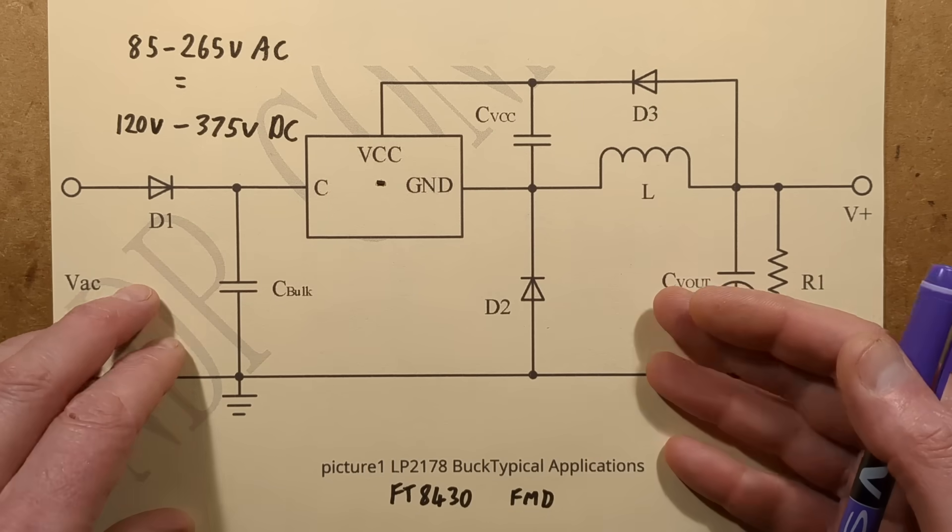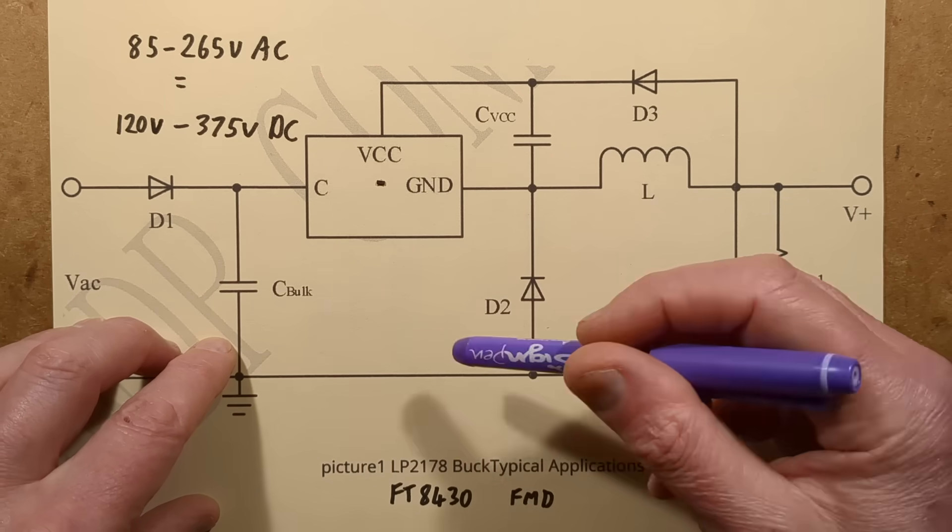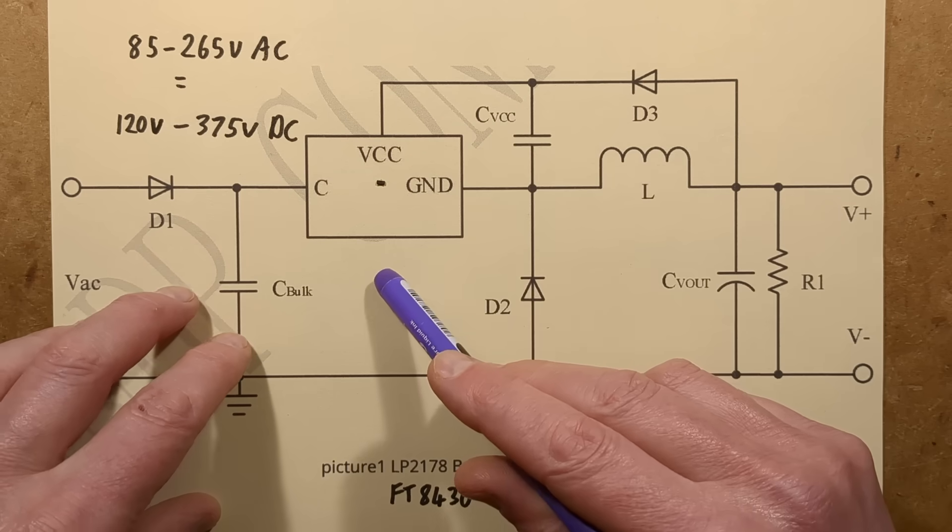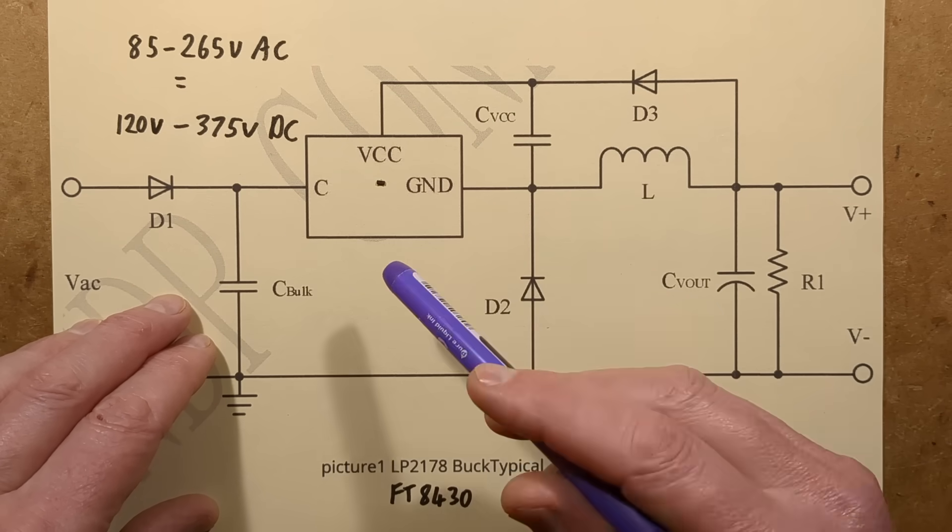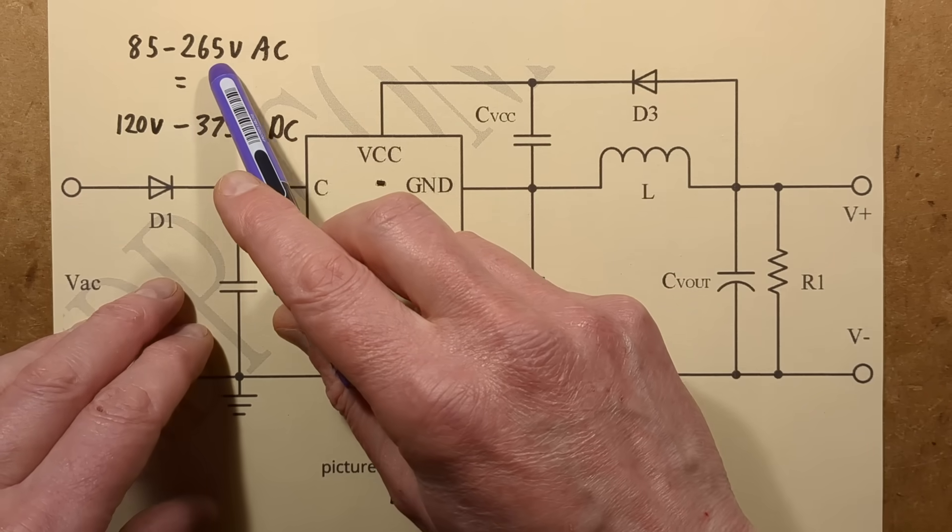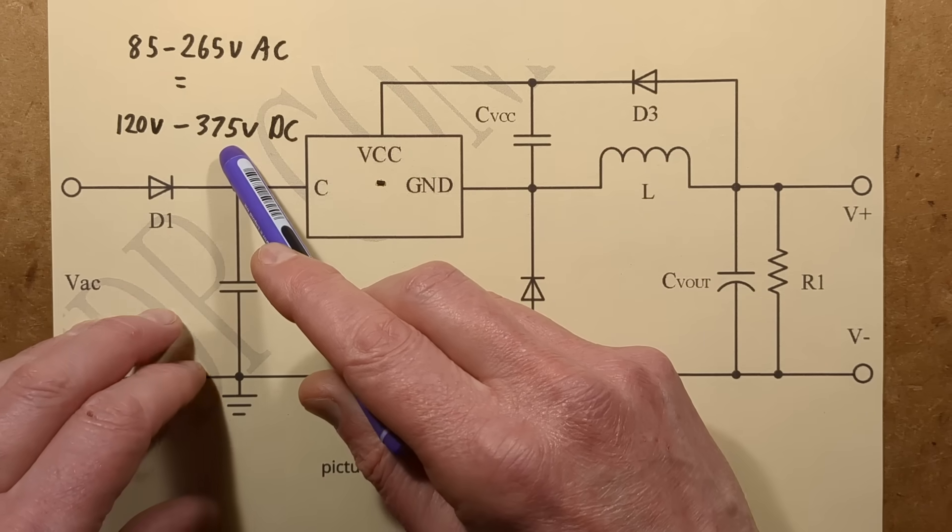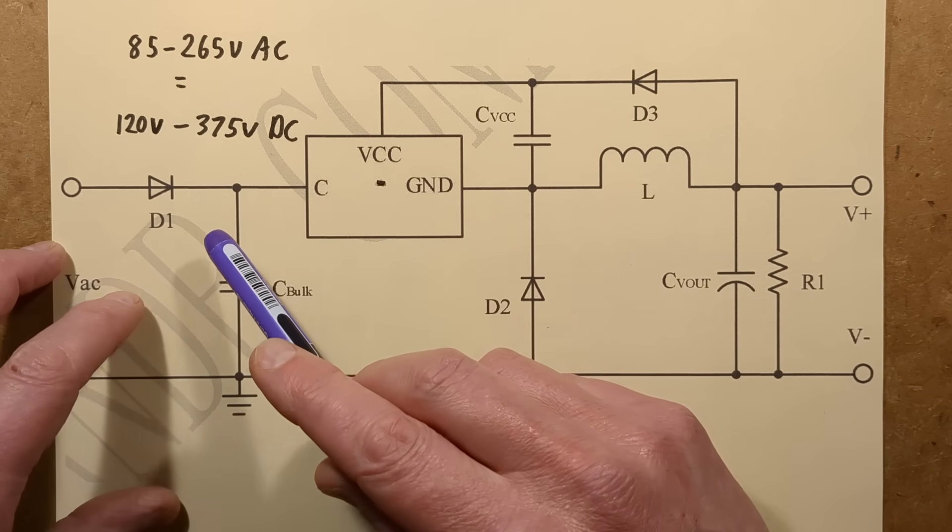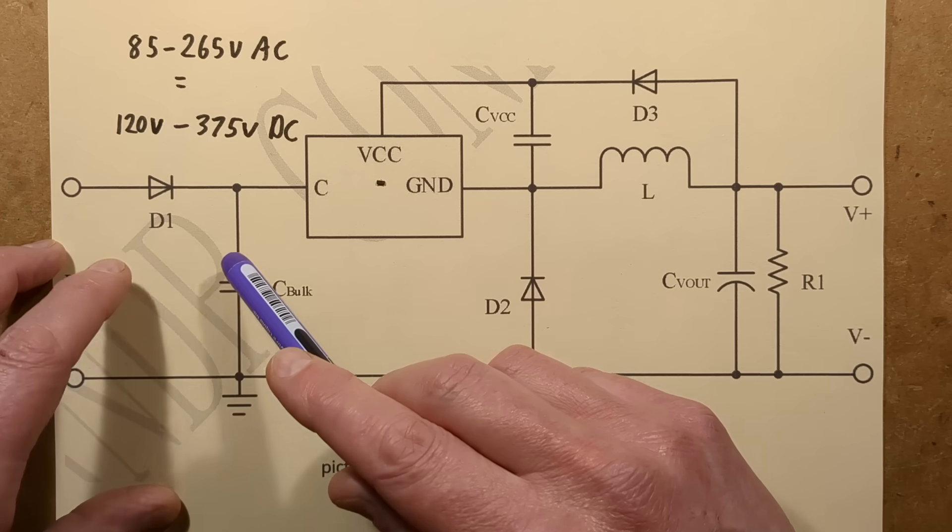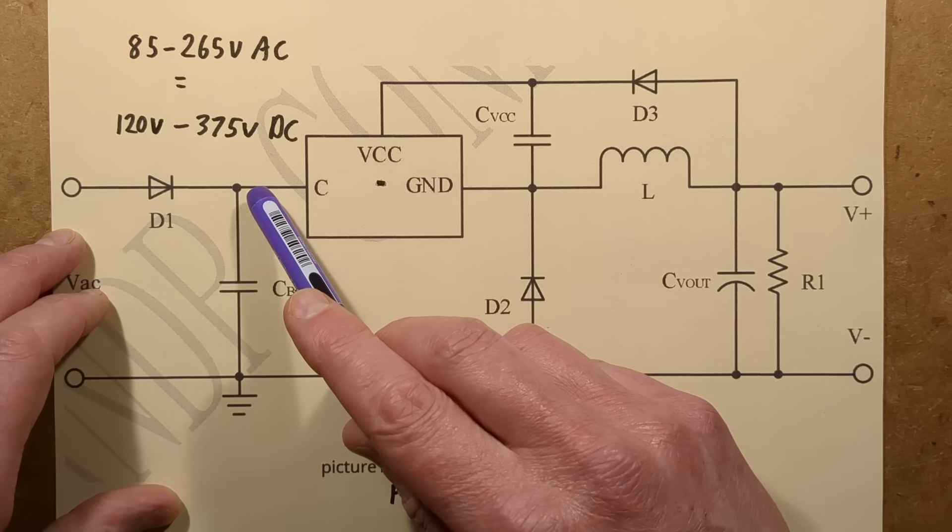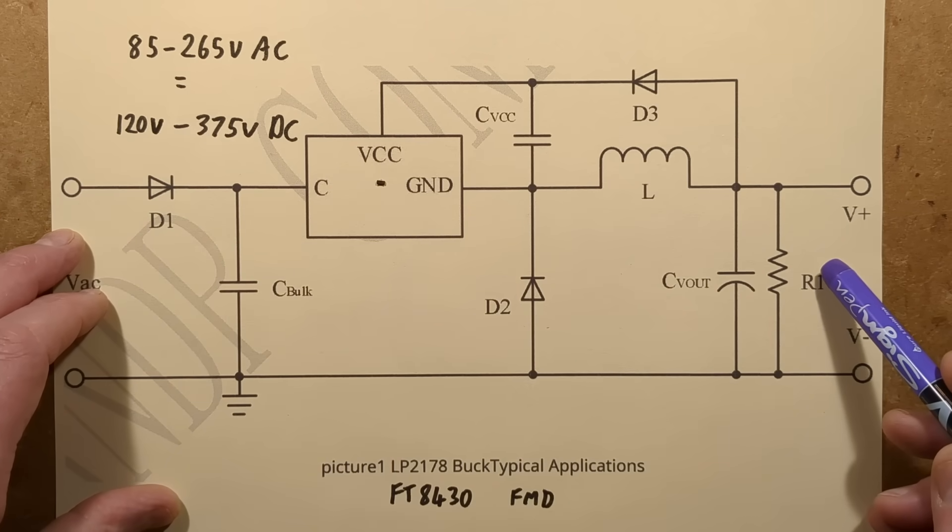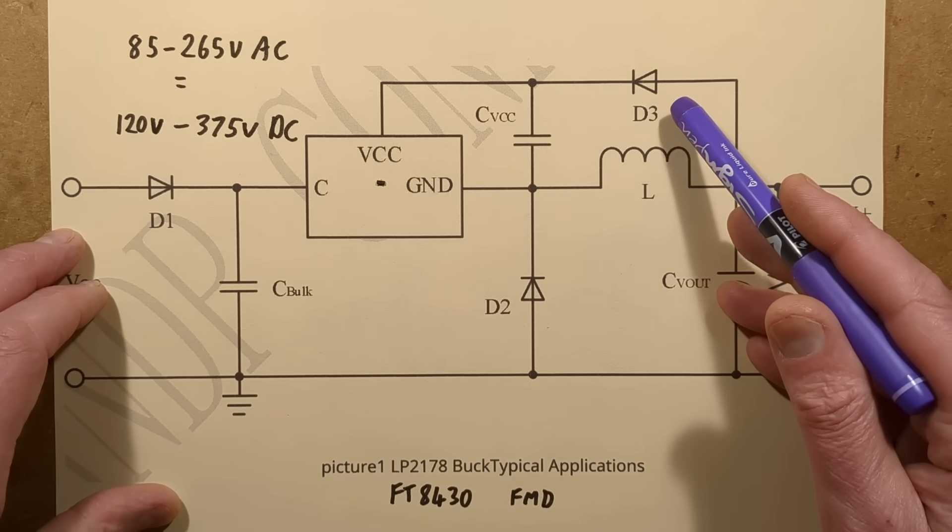In previous videos I've featured products that have ridiculously low pin count switching power supplies. They take in 85 to 265 volts AC, which equates to 120 to 375 volt DC once it's been smoothed and the peak has charged that capacitor up to the top. They convert it to 5 volts at this side and the components are so small.